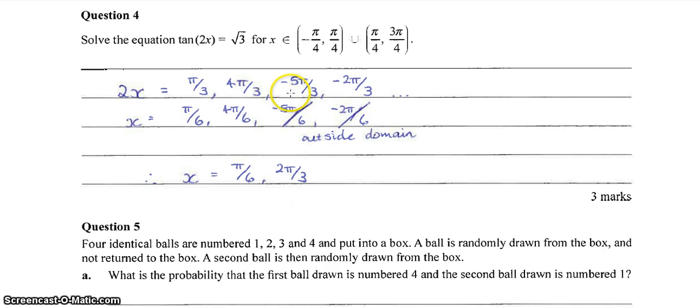And then maybe we'll go back the other way as well, get a couple of negative solutions just in case. That gives us negative 5 pi on 3 and negative 2 pi on 3. If we divide all our answers by 2, that gives us pi on 6, 4 pi on 6, negative 5 pi on 6, negative 2 pi on 6. Those solutions are outside our domain, so we're left with these two solutions.